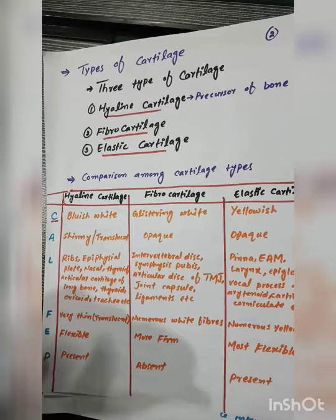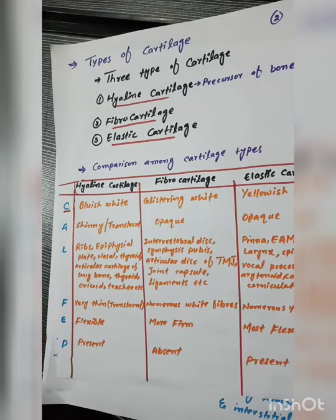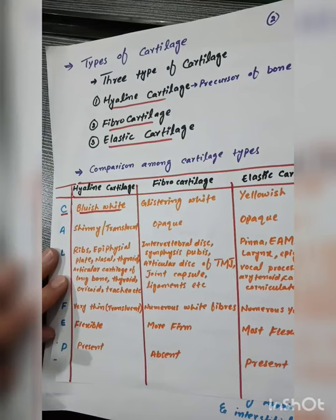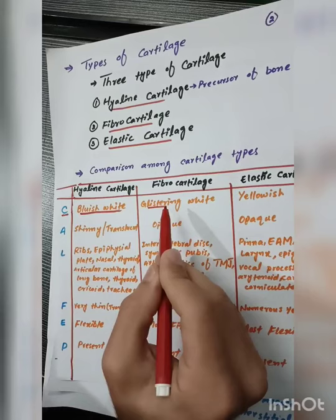The first comparison is based on color. Hyaline cartilage is bluish-white in color. Fibrocartilage is glistening white, meaning it has the same type of white color.